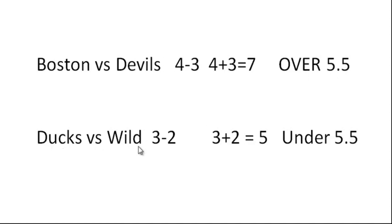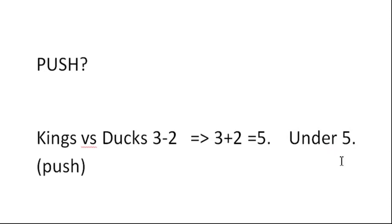Another example is the Ducks against Wild. The score was 3-2. 3 plus 2 equals 5, which means this game was under 5.5. So if you played under 5.5, you would have won. Another example is a push. What is a push? For example, you're playing a game under 5 exactly, without a half. You have Kings against the Ducks and the game ended 3-2. When you add the scores it comes up to 5, which means you got exactly the same number as you played. So in this case your bet is returned since you didn't really win or lose. That's called a push.